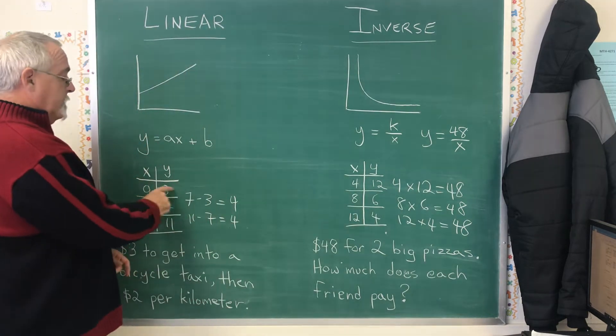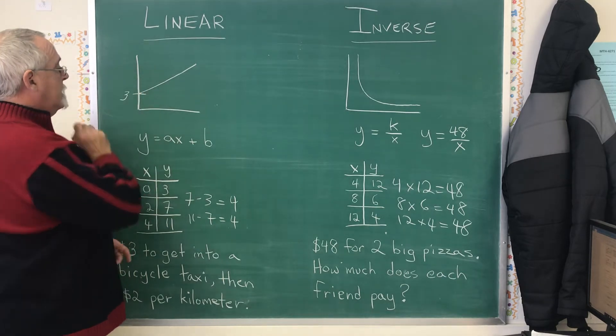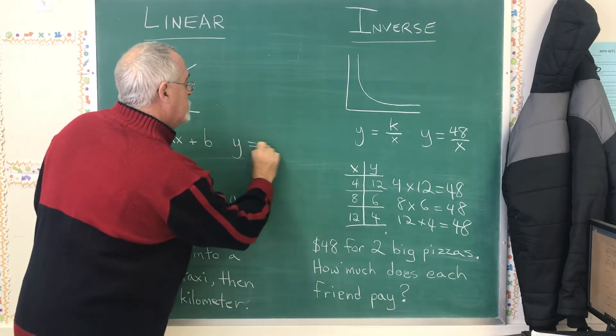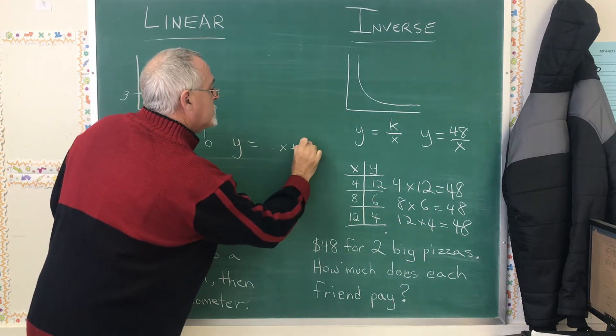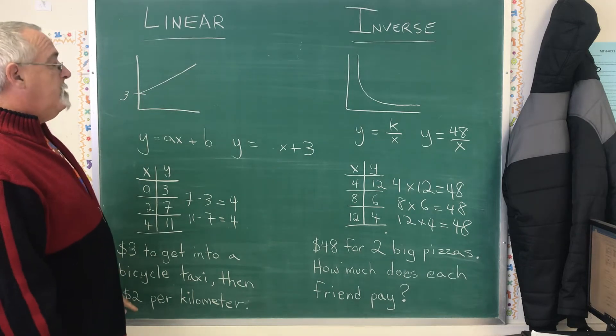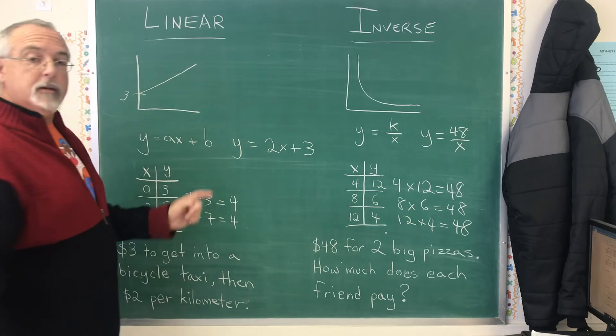Here, 0, 3 is the point that's right on the y-axis. So therefore, my y-intercept is 3. I have y equals some slope times x plus 3. And then, the $2 per kilometer is the slope. I have the equation y equals 2x plus 3.